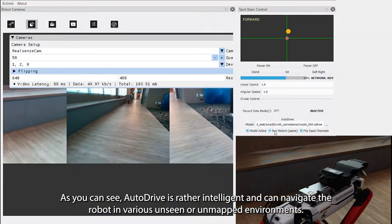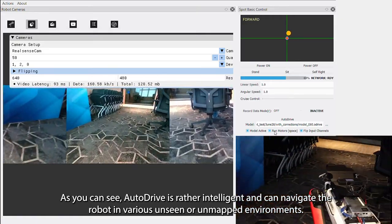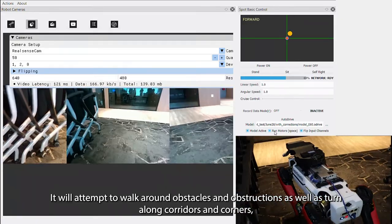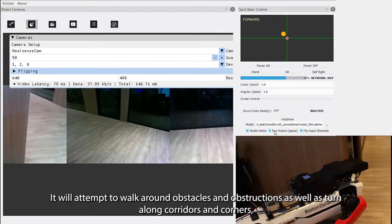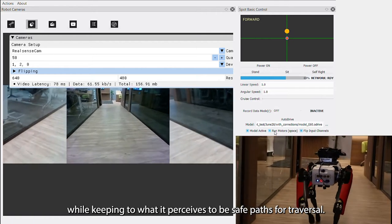As you can see, Autodrive is rather intelligent and can navigate the robot in various unseen or unmapped environments. It will attempt to walk around obstacles and obstructions as well as turn around corridors and corners while keeping to what it perceives to be safe paths for traversal.